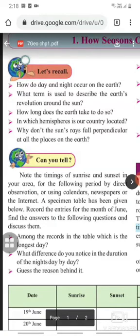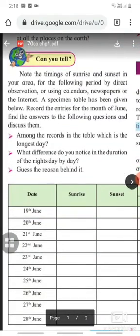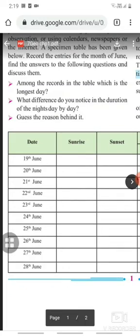From this chapter, can you tell the timings of sunrise and sunset in your area? Note these for the following period by direct observation or using calendars, newspapers, or the Internet. A specimen table has been given below. Record the entries for the month of June, find the answers to the following questions, and discuss them.